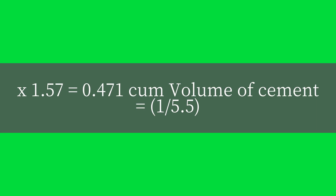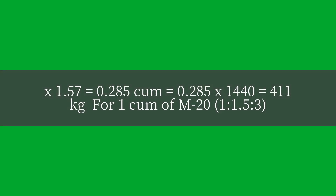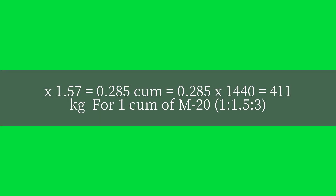Volume of cement equals (1 / 5.5) × 1.57 = 0.285 cubic meters, which equals 0.285 × 1,440 = 411 kg for 1 cubic meter of M20 concrete in the ratio 1:1.5:3.